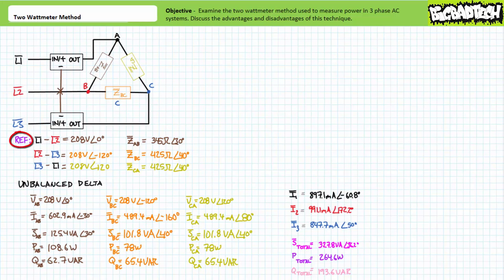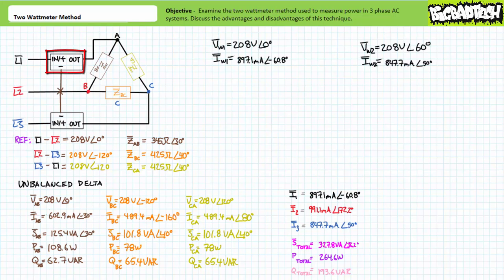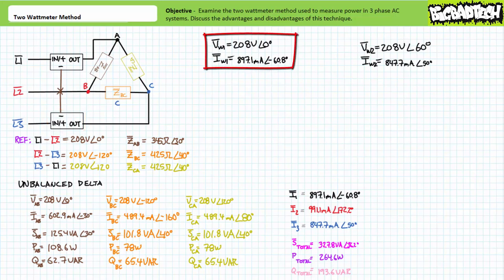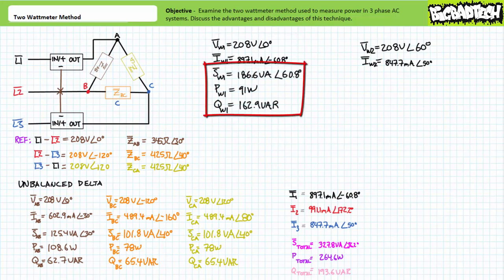Recall the calculations we made for the unbalanced delta configuration made use of L1/L2 as our reference. As such, we don't really need to compensate for any phase-shifted offset between a line-to-line and a line-to-neutral voltage, since the two watt meters central to the two-watt meter method are reading the line-to-line voltages. Watt meter 1 measures line 1 with respect to line 2, and line current in line 1. Watt meter 2 is flip-flopped and measures line 3 with respect to line 2, and line current in line 3. Watt meter 1's line 1 to line 2 voltage reading would be 208 volts at an angle of 0 degrees, and its line L1 current reading would be 897.1 milliamps at an angle of negative 60.8 degrees. Current lags voltage by a relative 60.8 degrees. Application of the AC power formula demonstrates watt meter 1 would display 186.6 volt amperes, of which 91 watts is real power and 162.9 vars is reactive. Taken in isolation, this watt meter's reading is garbage because it's not the whole picture.